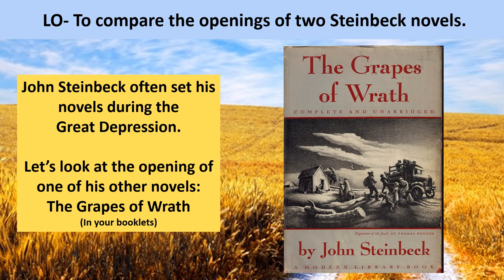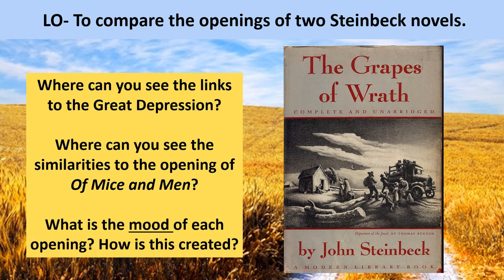Now you've had a look at those images and hopefully had a think about some words to summarise the mood around this time, I'd like you to look at the opening of The Grapes of Wrath, which you'll find in your booklets. It's about a page long altogether, and of course this novel is also, like Of Mice and Men, set during the Great Depression. As you're reading, consider: where can you see the links to the Great Depression? Where can you see any similarities or differences to the opening of Of Mice and Men?